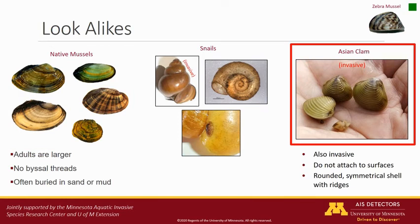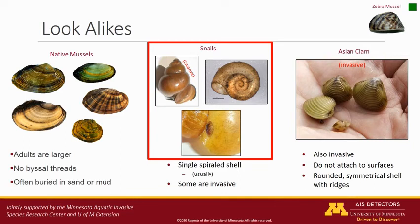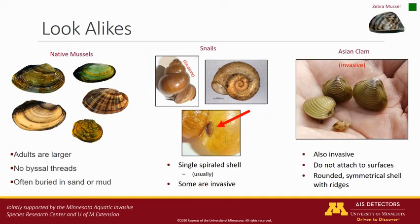Asian clam is another invasive species found in Minnesota. Like native mussels, they are not able to attach to other surfaces and are usually found in or on soft substrates like sand or mud. While zebra mussels have an asymmetrical shell shape like a wedge, Asian clam have a rounded symmetrical shell with notable ridges. While mussels including zebra mussels and clams have two shells, snails have a single shell. Most snail shells have a spiral shape except for freshwater limpets, which have a small flattened cone-type shell and are often confused with zebra mussels because of their shape and because they are generally attached to other objects. Upon closer examination, you should notice that they only have a single shell and attach with their body rather than byssal threads. Some snails are also invasive in Minnesota, such as the Chinese mystery snail.